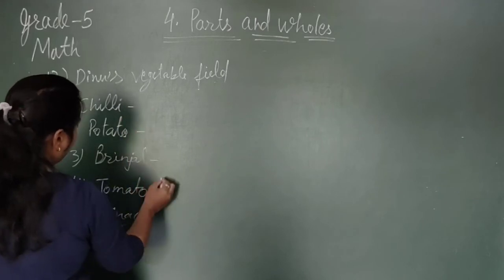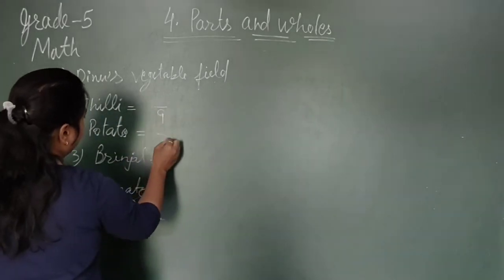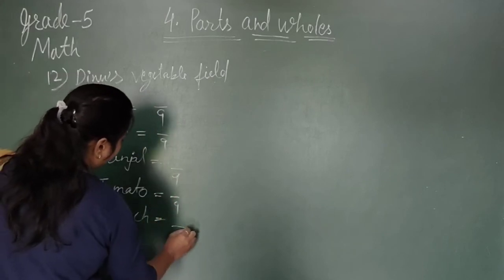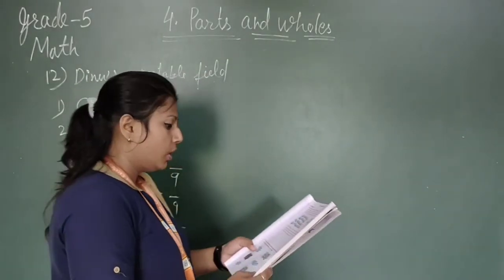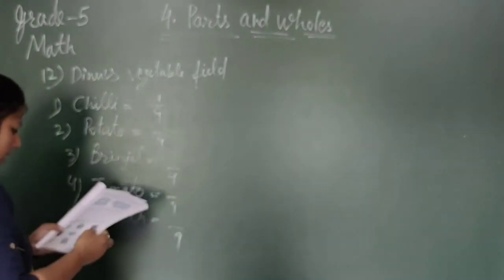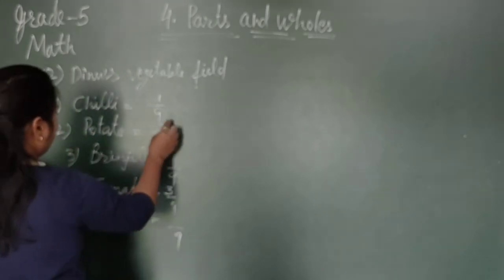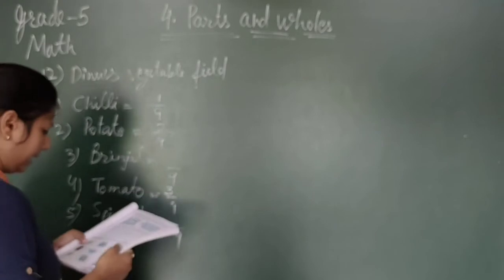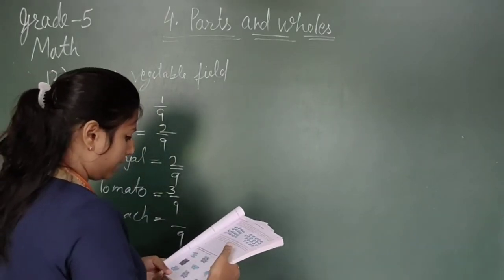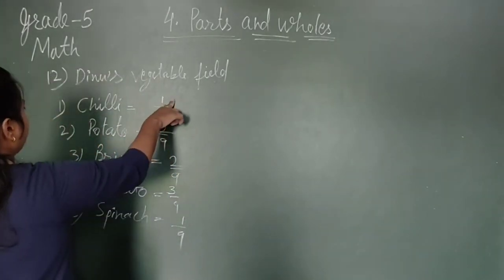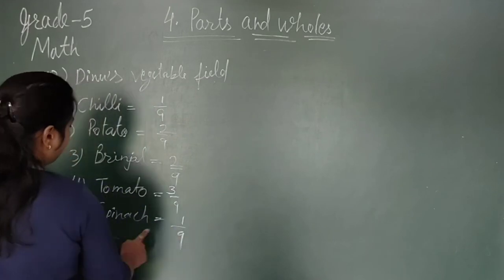How many parts? Total part is 9, then the denominator is 9. Chilli having 1 part, one upon nine. Tomatoes having three upon nine. Potatoes having two upon nine. Brinjal having two upon nine. Chilli 1 time, potato 2 times, brinjal 2 times, tomato 3 times, spinach 1 time.